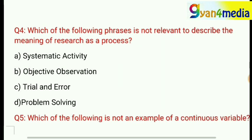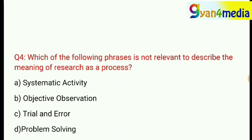Question number four: which one of the following phrases is not relevant to describe the meaning of research as a process? They are asking which phrase is NOT relevant. Options given are: A, systematic activity; option B, objective observation; option C, trial and error; or option D, problem solving. The correct answer is option B — objective observation.